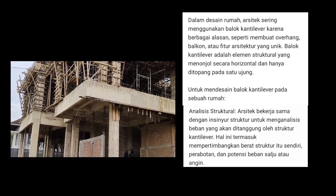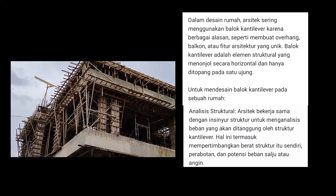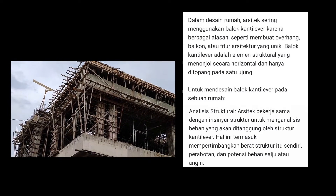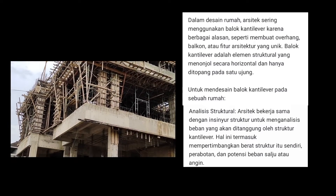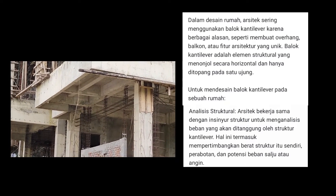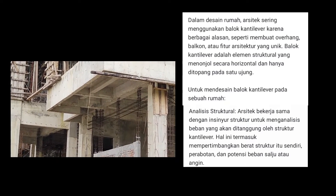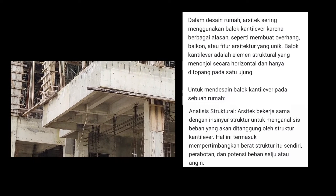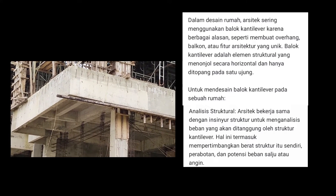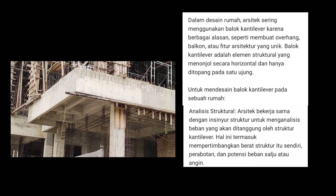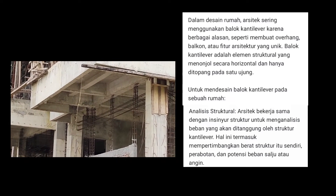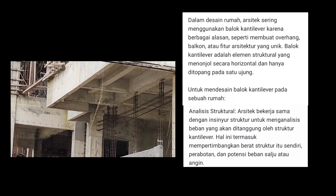In house design, architects often incorporate cantilever beams for various reasons, such as creating overhangs, balconies, or unique architectural features. Cantilever beams are structural elements that protrude horizontally and are supported at only one end. To design a cantilever beam in a house, several key steps are involved.